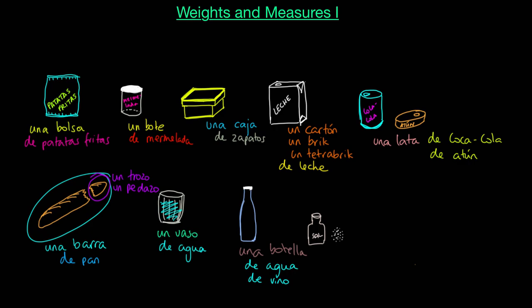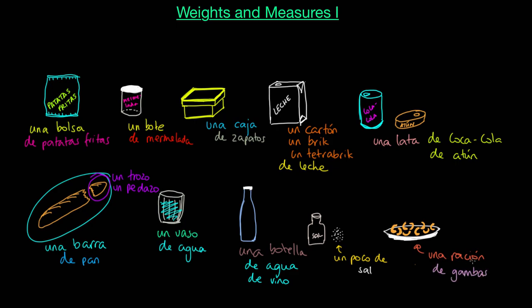Esto es un poco de sal — a bit of salt. Un poco de sal. Y esto es una ración de gambas — a portion of prawns. Una ración.